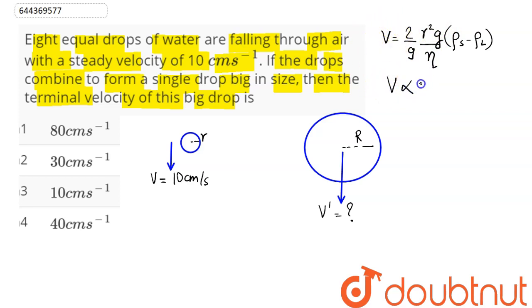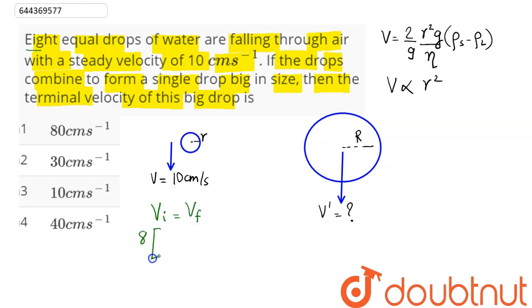We can see that terminal velocity is proportional to the square of the radius. Now, when 8 such drops combine to form a bigger drop, volume will remain conserved. Hence, initial volume equals final volume: 8 × (4/3)πr³ = (4/3)πR³.